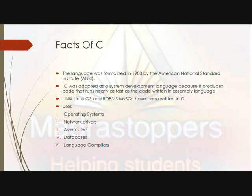Facts about C: it was formulated by the American National Standard Institute and formulated in 1988. The main purpose was to develop the Unix operating system because C language was used for that. The operating system handles the basic platform, booting process, input/output configuration, CPU, and all processing. So operating systems use C.